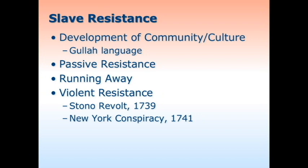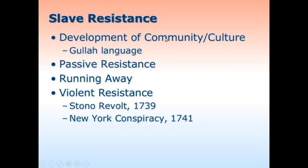The violent resistance we're going to discuss today is specifically the Stono Rebellion of 1739. It was one of the most significant slave revolts in the South, happening in South Carolina on September 9th, 1739. It was the largest revolt up to that time and killed about 60 people.